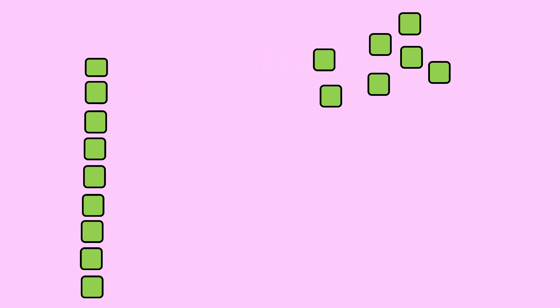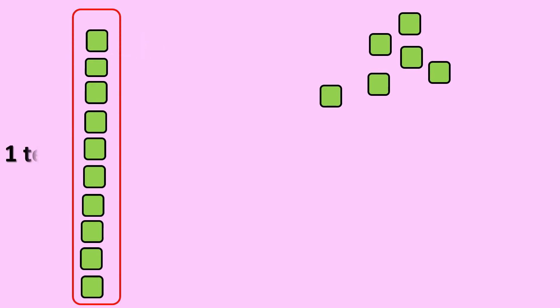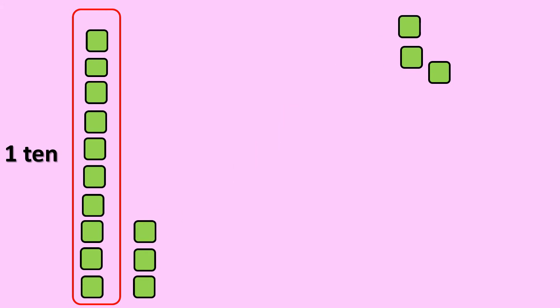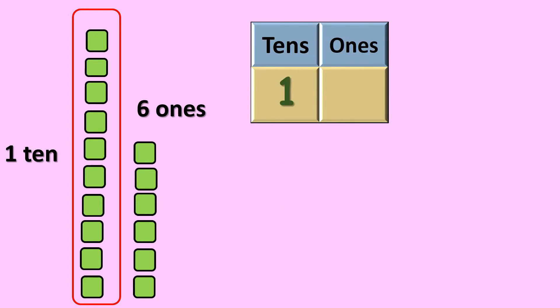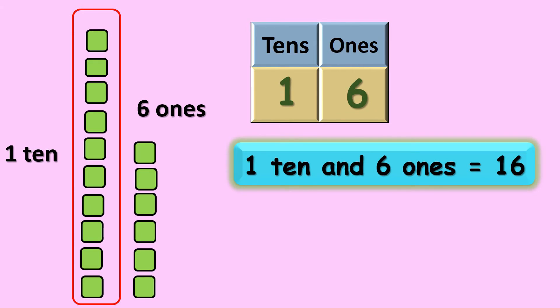It's time for our next number. Shall we start arranging? 1 2 3 4 5 6 7 8 9 10. So 10 ones gives you 1 ten. The remaining are 1 2 3 4 5 6. There are 6 ones. So 1 ten and 6 ones gives you 16.